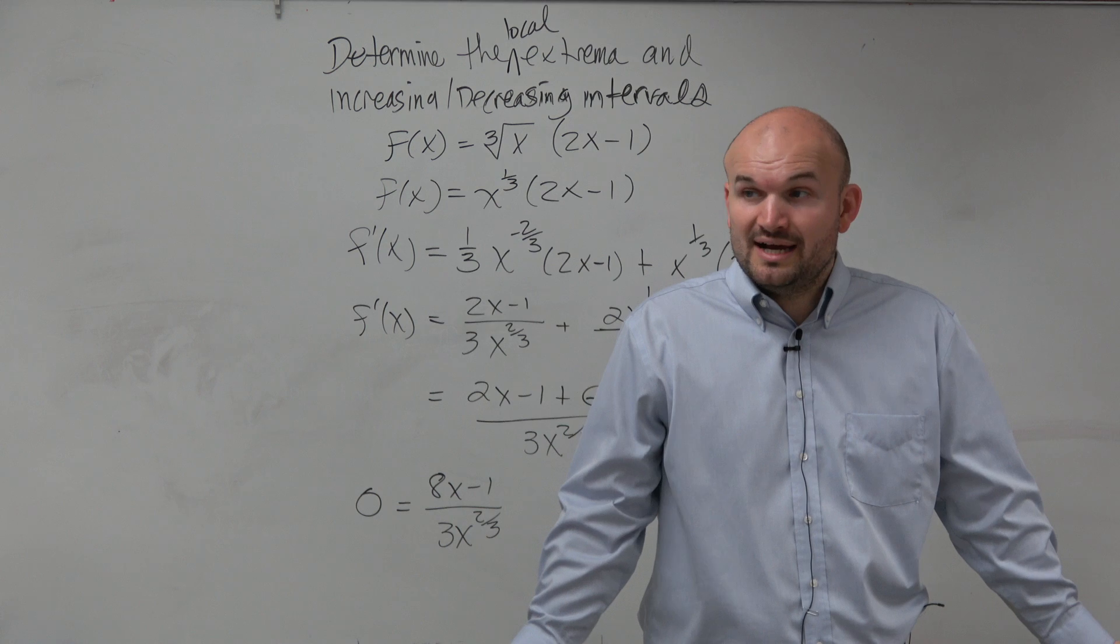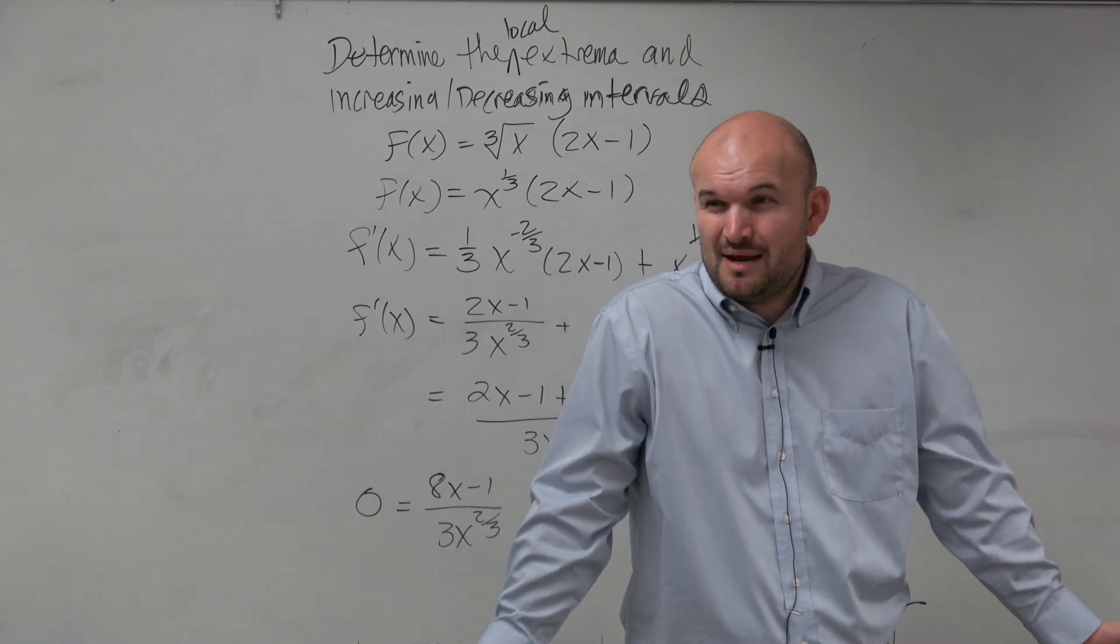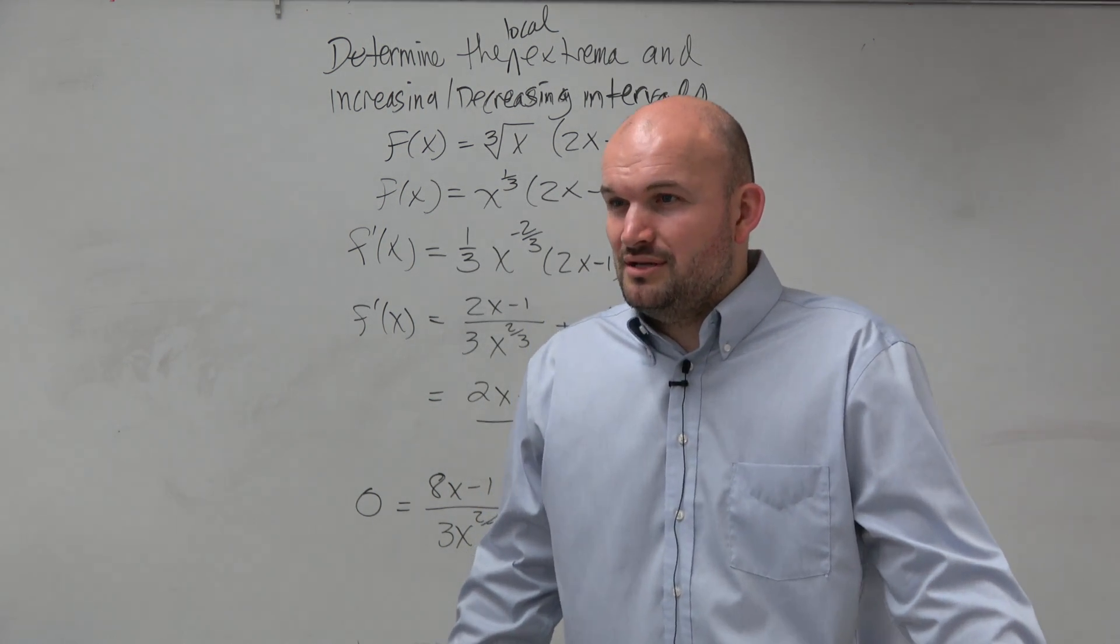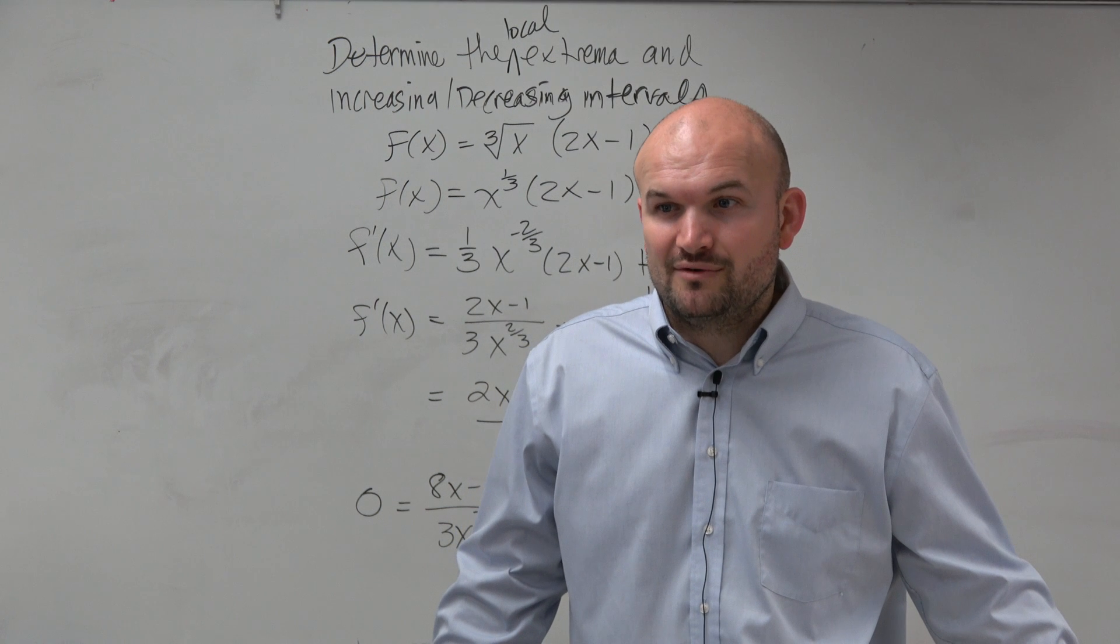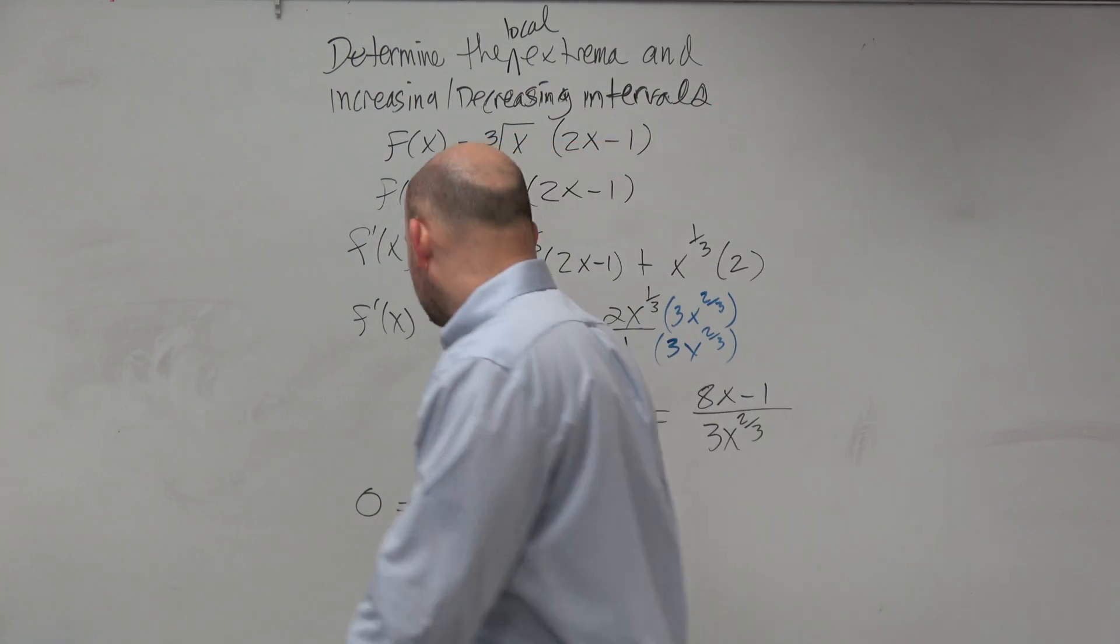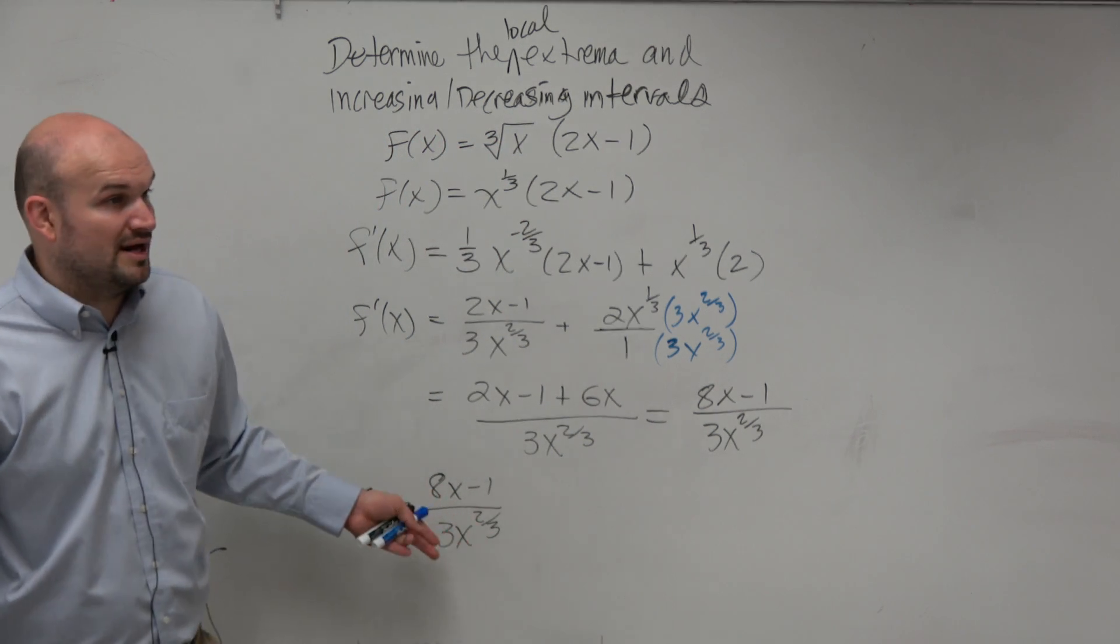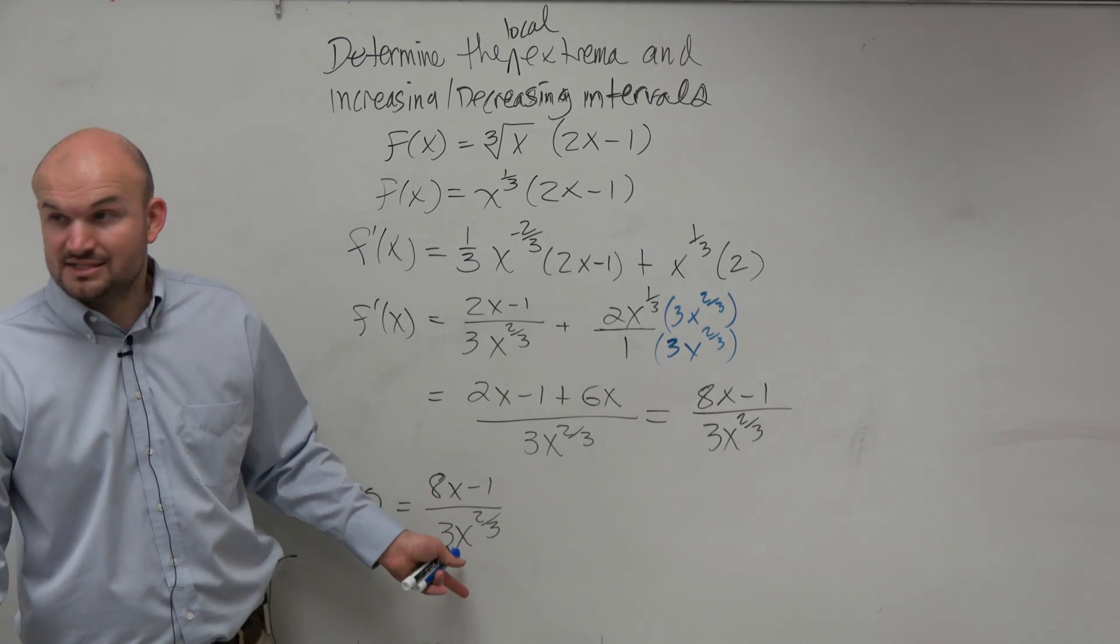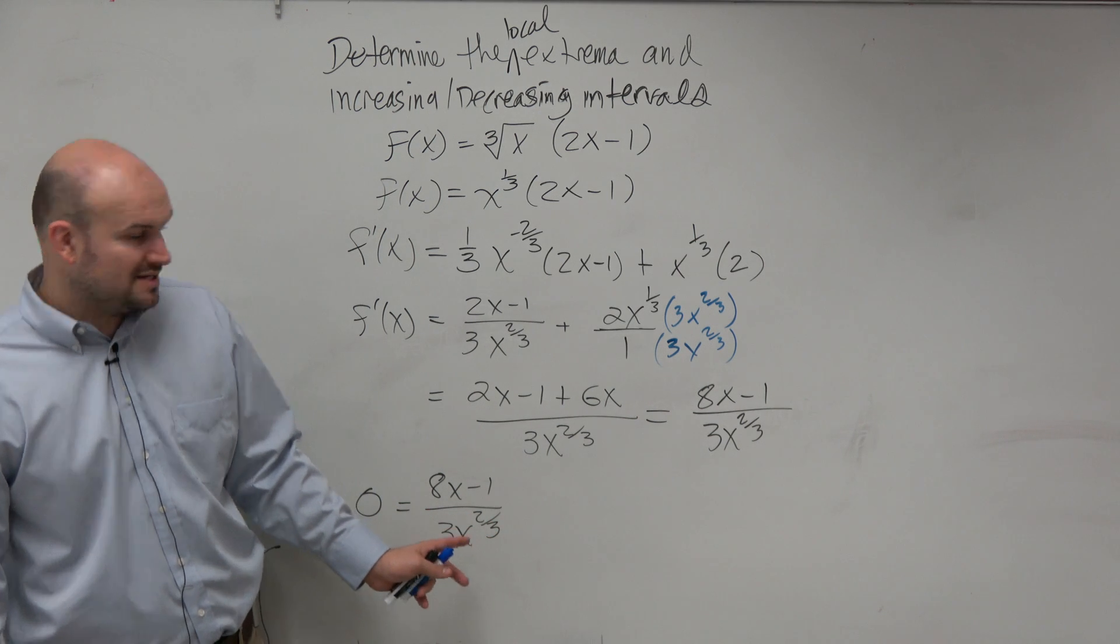And when I go and do that, I get (8x - 1) over (3x^(2/3)). Now, when we solve this, guys, when we have a rational function, does anybody remember what happens when you're solving a rational function? The simple way to really look at this? OK. Well, we have x in the numerator and denominator, right?